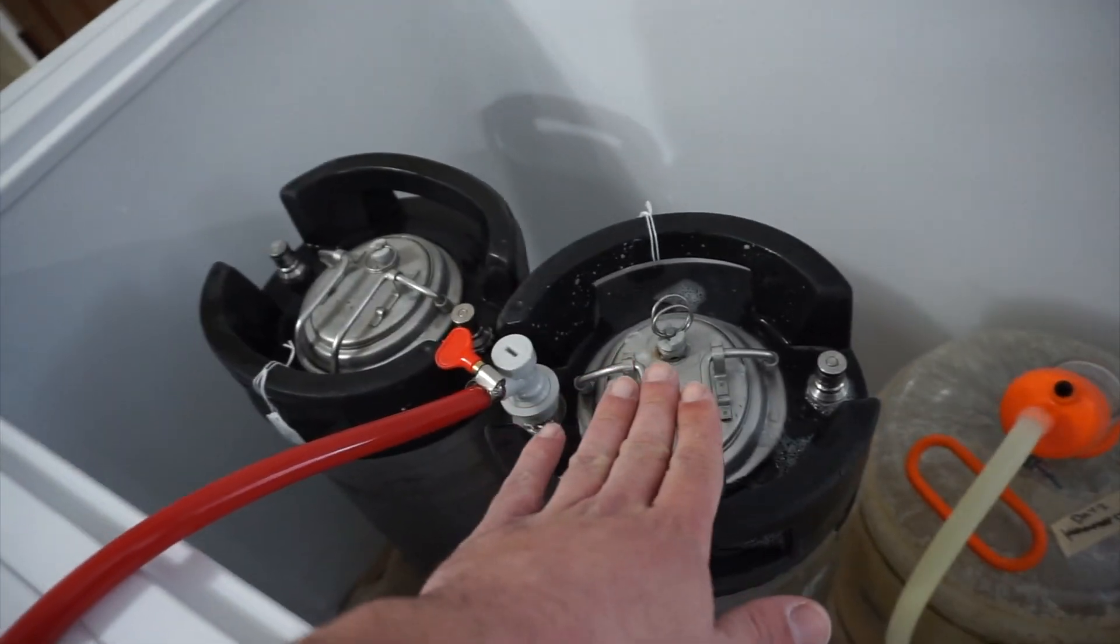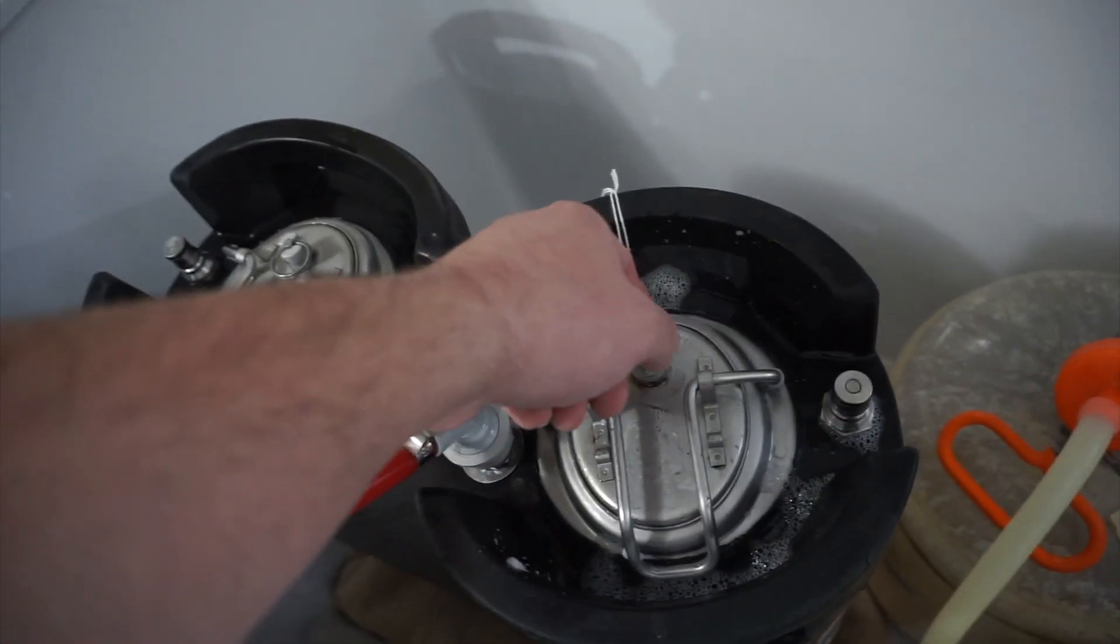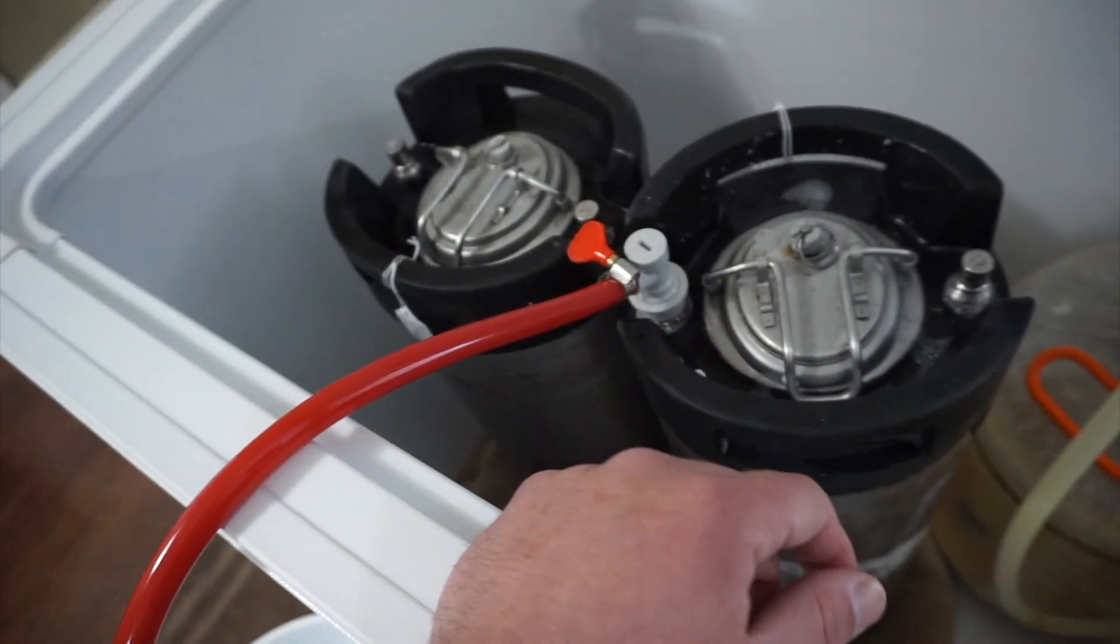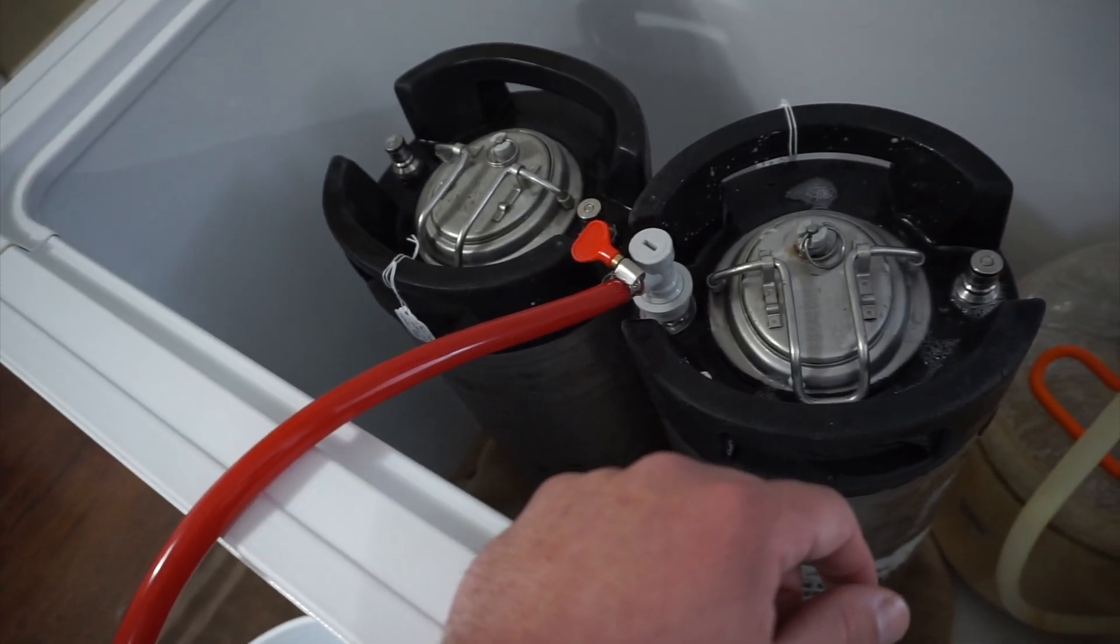You're letting it sit to, in theory, let the CO2 settle below the oxygen so that the oxygen gets bumped up. And then as you pull that, that's what's coming out, and then the CO2 following it. All right. And now just go ahead and do the same thing with the other keg and you are set, man.